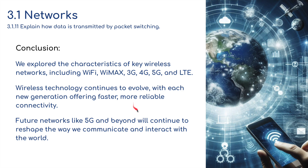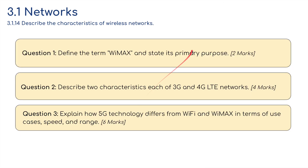There are three review questions. Question one: define the term WiMAX and state its primary purpose. Question two: describe two characteristics each of 3G and 4G LTE networks. Question three: explain how 5G technologies differ from Wi-Fi and WiMAX in terms of use cases, speed, and range. Pause the video to attempt these yourself.